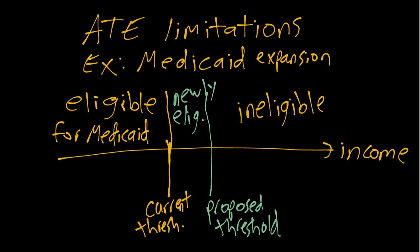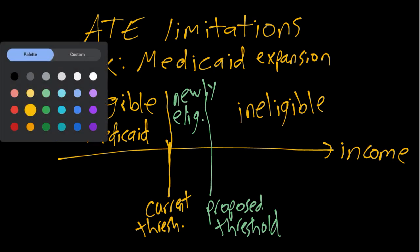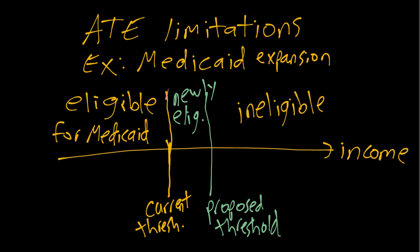There are two limitations of the ATE we could think about. First, the ATE gives us the average over the entire population of the treatment effect. When we're thinking about this specific policy change, we are really only interested in these newly eligible folks in the middle.